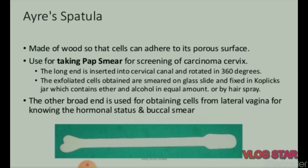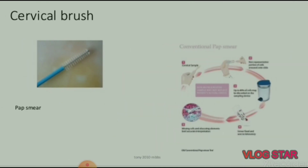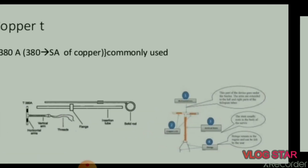Next instruments for pap smear — cervix sampling devices: cervix brush, cytobrush, plastic spatula, Ayre's spatula, and different types of sampling devices. Iris spatula is made of wood so that cells can adhere to its porous surface. Used for taking pap smear for screening of carcinoma cervix. The long end is inserted into the cervical canal and rotated 360 degrees. Exfoliated cells are smeared on a glass slide and fixed in a Coplin jar containing ether and alcohol in equal amounts or by hair spray. The broad end is used for obtaining cells from the lateral vagina for hormonal status and buccal smear.